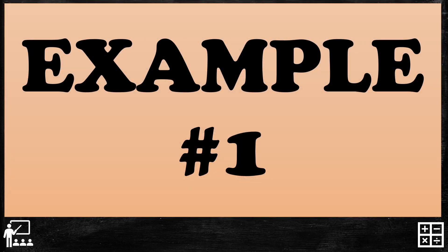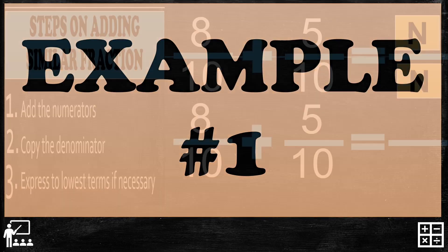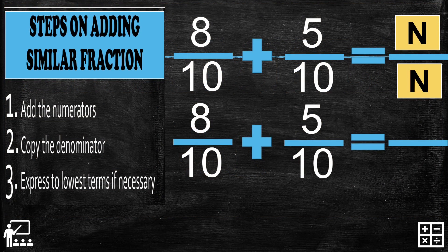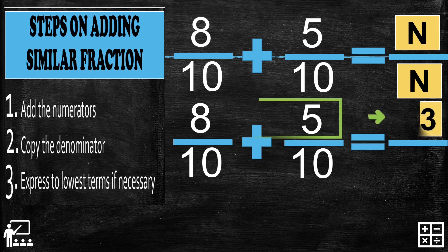Let's try an example. We add 8 over 10 and 5 over 10. The first step is to add the numerators. The numerators are 8 and 5, so 8 plus 5 equals 13.